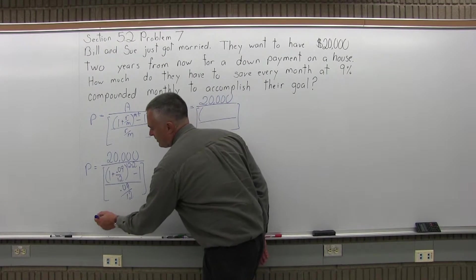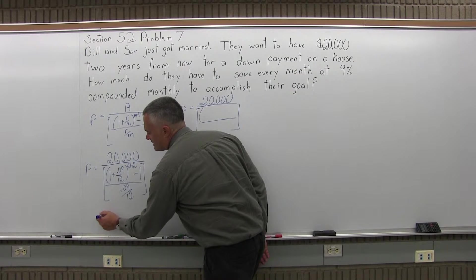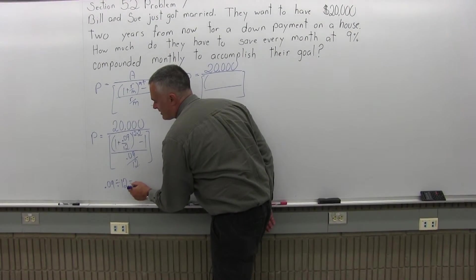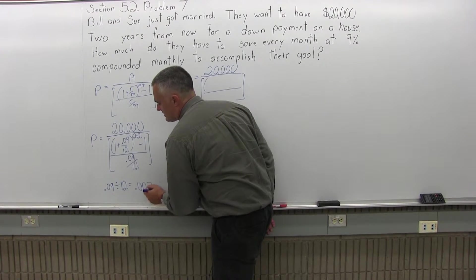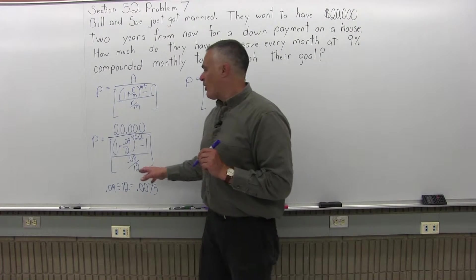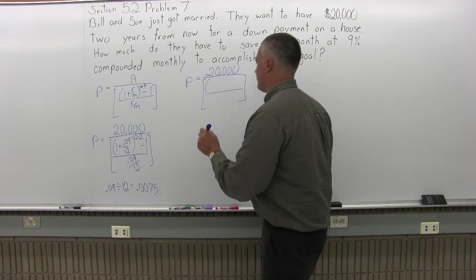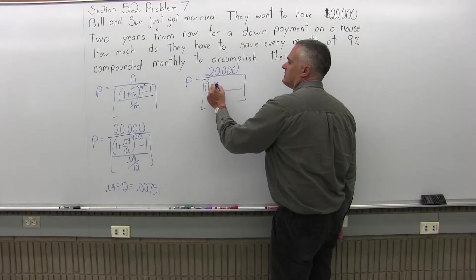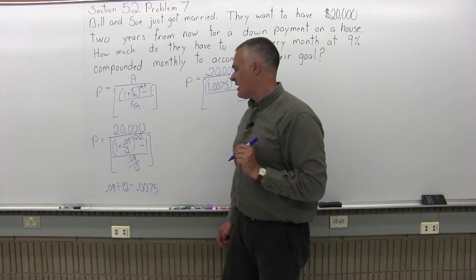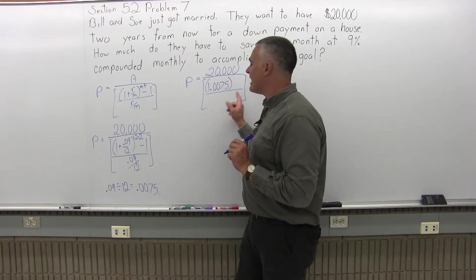And if you forget that, just use your calculator, .09 divided by 12 equals, and the calculator will tell you it's .0075. And again, in the parentheses, I'm going to add a 1 to that .0075, which would make it 1.0075.